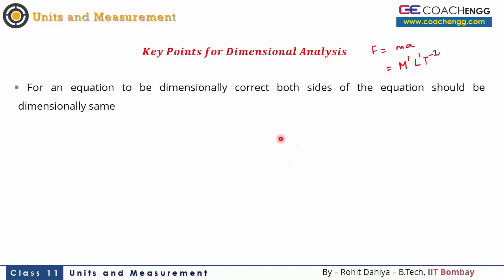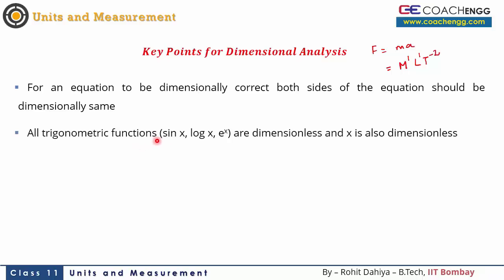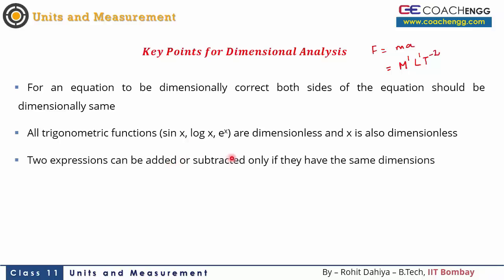When you do dimensional analysis, remember that an equation is dimensionally correct when both sides of the equation are dimensionally the same — dimensions of the left-hand side should equal dimensions of the right-hand side. Another important point: trigonometric functions like sin x, cos x, tan x, and logarithmic and exponential functions like log x and e^x are all dimensionless. The argument inside these functions must also be dimensionless. Besides, two expressions can only be added or subtracted when they have the same dimensions — we can only add the same type of quantities.